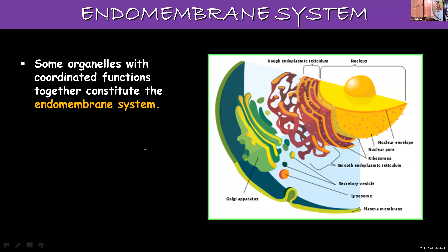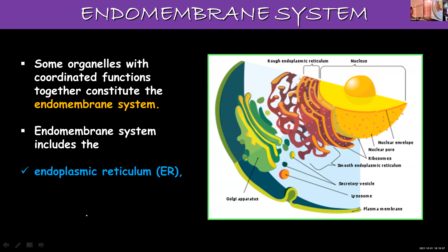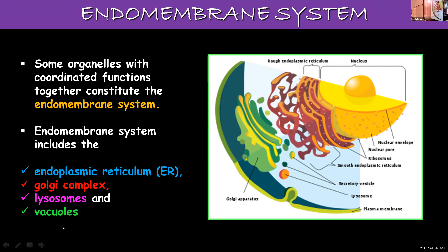We will start with the endomembrane system. Some organelles with coordinated functions together constitute the endomembrane system — a group of organelles whose functions are interrelated. The organelles included under the endomembrane system are: endoplasmic reticulum (ER), Golgi complex, lysosomes, and vacuoles. These are the four organelles that form the endomembrane system.